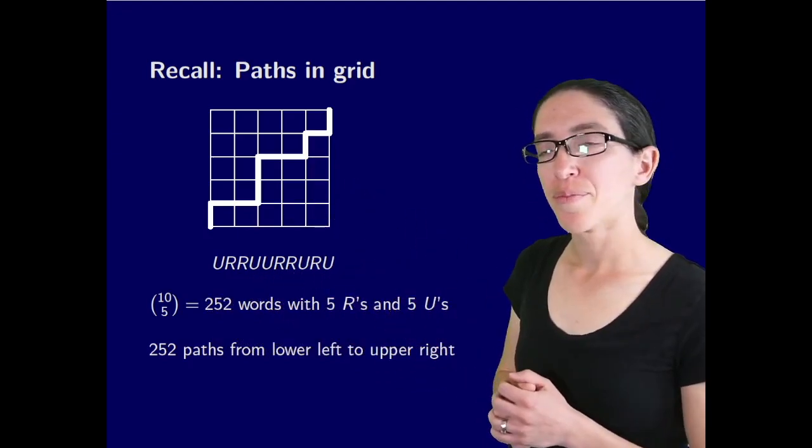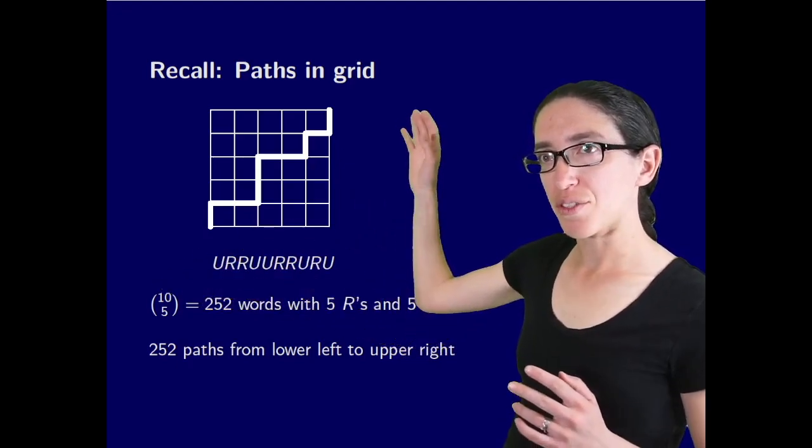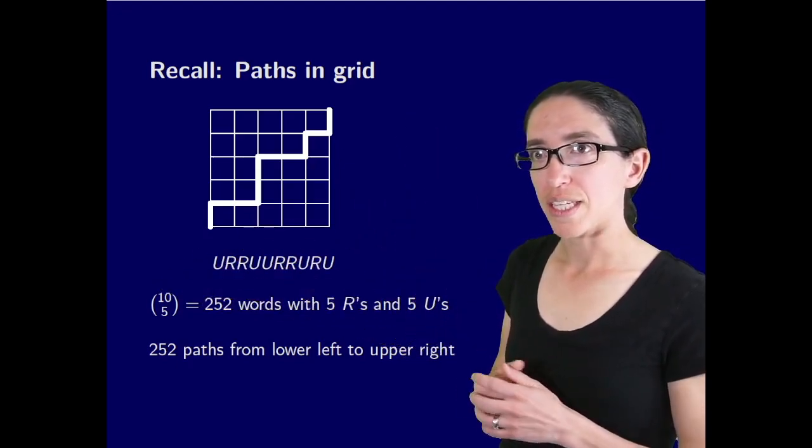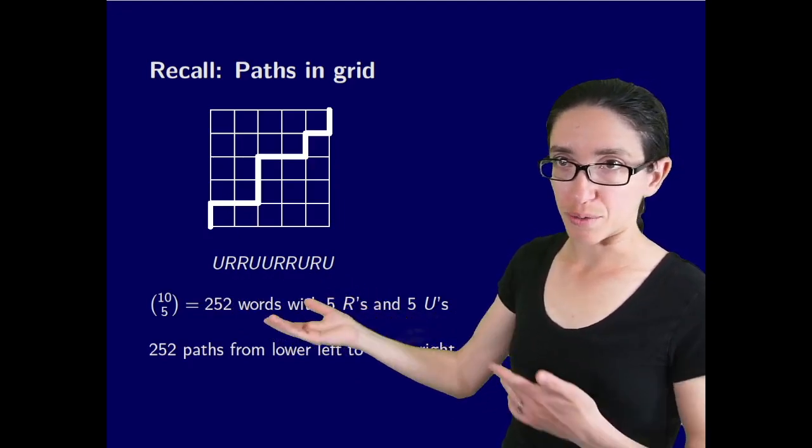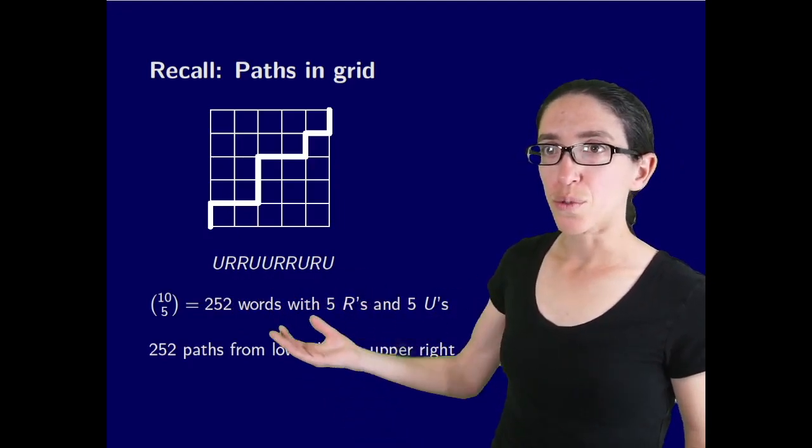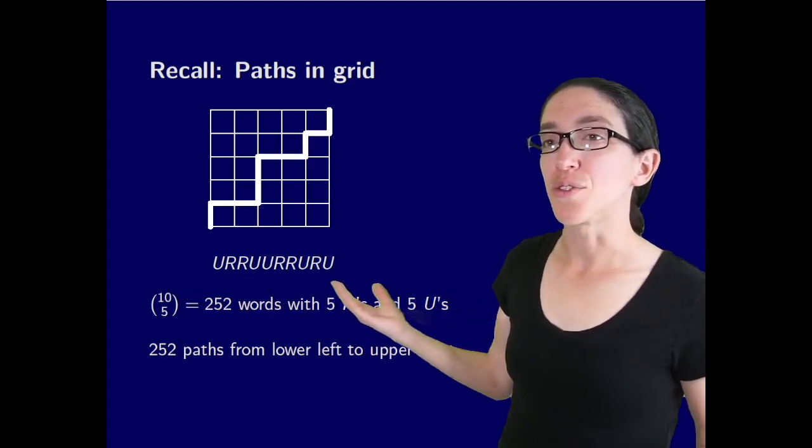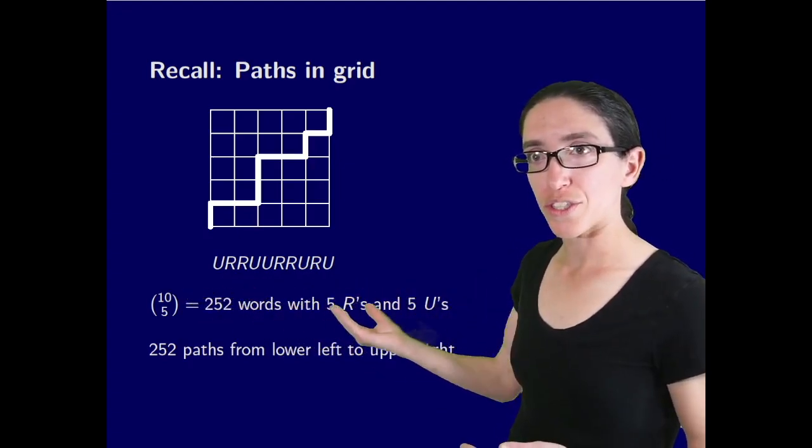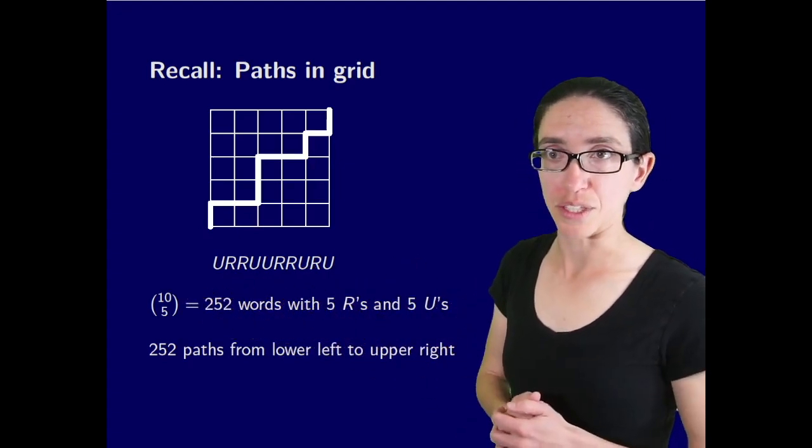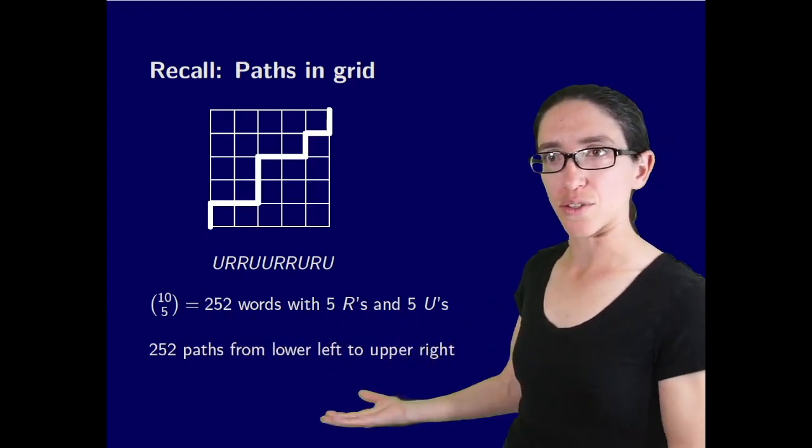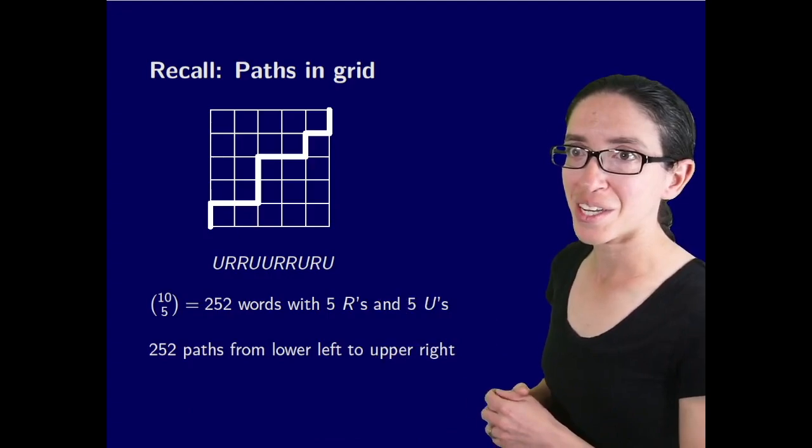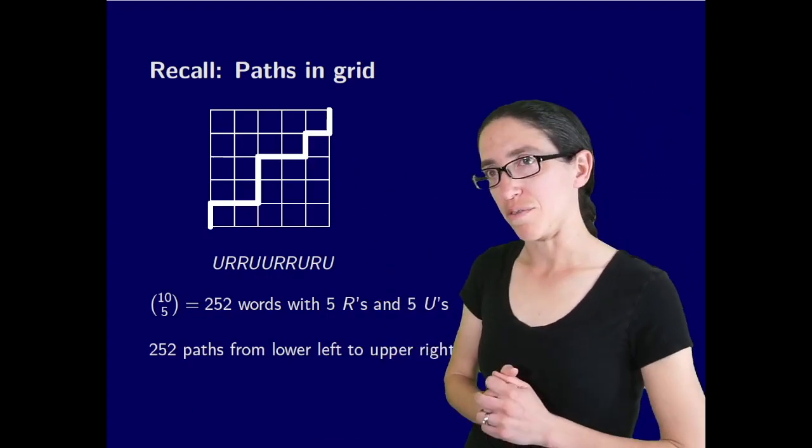The way to count the paths from one corner to another is by saying we have to go in this case up five times total and right five times total. It doesn't matter what order you do them. So there's 10 choose 5 of these direction words because you choose which positions have the right steps. And so there's 252 words with five R's and five U's corresponding to the 252 paths from the lower left to the upper right of the 5x5 grid.